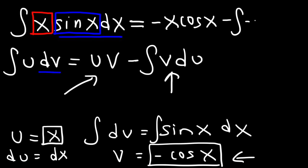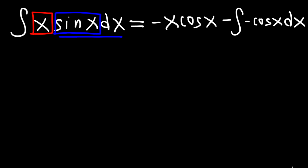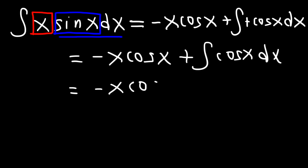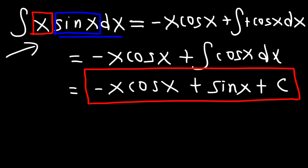So v is still negative cosine x, and du is equal to dx. Now let's simplify the expression that we have. We have two negative signs, which we can make a positive sign. And the antiderivative of cosine x is sine x. Any time you have an indefinite integral, you need to include the constant of integration, plus c.